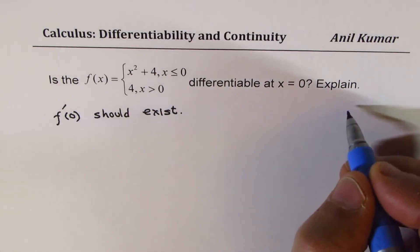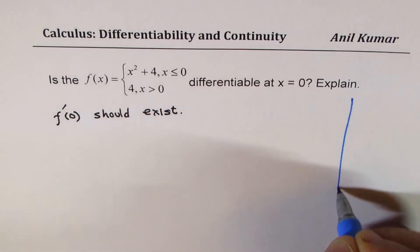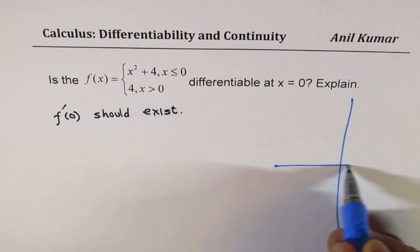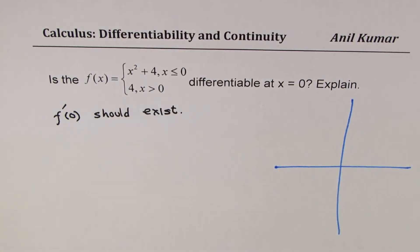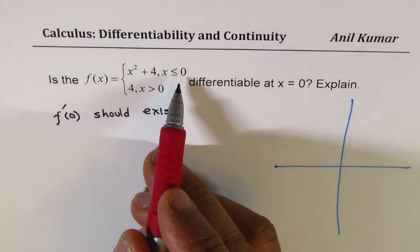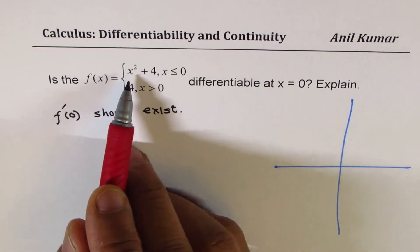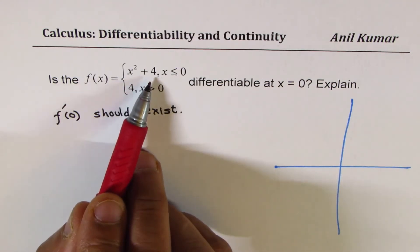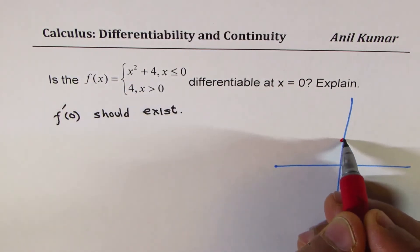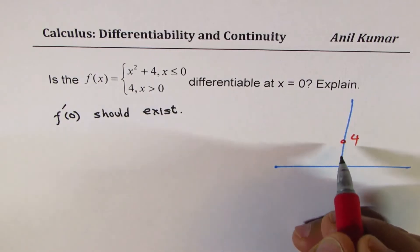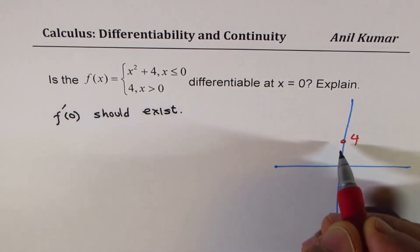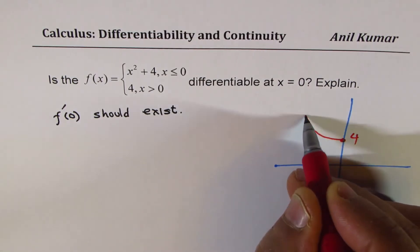To understand this function better, it's good to sketch the function. We know when x is less than or equal to 0, it is a parabola which has been translated 4 units up. So 4 units up, this is the point at 4. On the left side it's going to be a parabola like this.